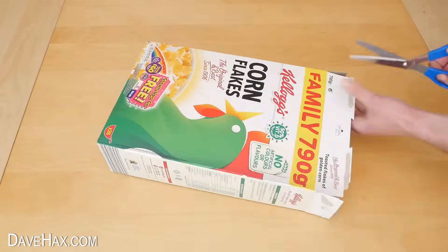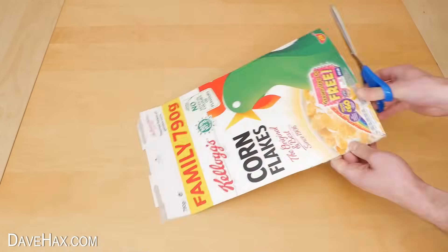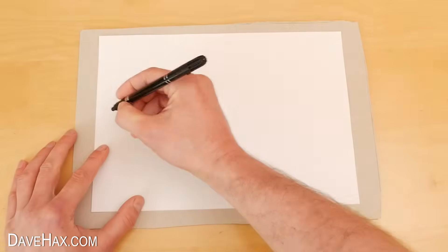Start by cutting up the cereal box so you've got a flat sheet of card like this. I'm drawing my circuit out on this piece of paper first so I've got something to work to.